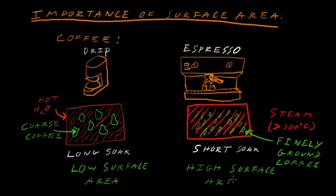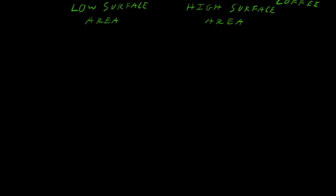So the drip coffee is your idea of a low surface area, slow reaction between the water and the coffee. The espresso is a high surface area. We get a very fast extraction between the water and the coffee, a fast reaction.